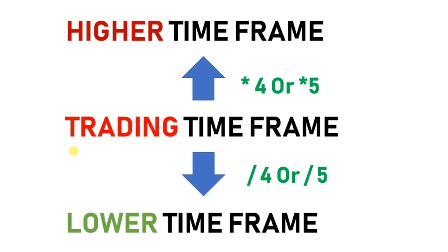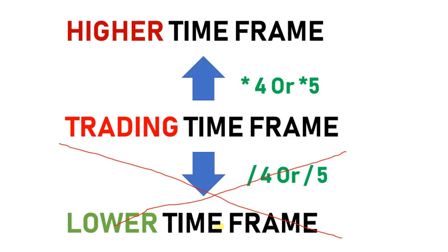If it is confusing or complex, you can drop the lower time frame. If you just have a trading time frame and a higher time frame, you can optionally check the lower time frame. As of now: trading time frame and higher time frame. If the trading time frame is 15 minutes, the higher time frame is 60 minutes. If the trading time frame is daily, the higher time frame is weekly.